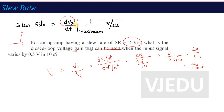So CMRR and slew rate are very important characteristics. Most of the time in the question paper, there is a question asking you to define these characteristics — what do you mean by slew rate, what do you mean by CMRR. These are very important characteristics.